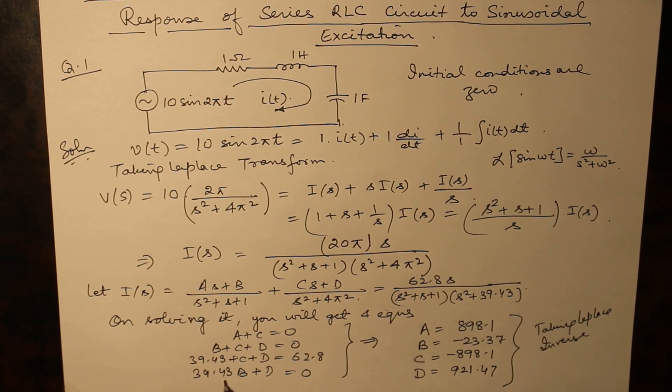First subtract C plus D from both of them, so you will get an equation: 39.43A minus B is equal to 62.8. From there you will get the value of B.